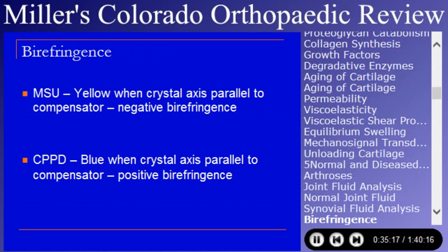Polarized light is used to look for crystals. Birefringence is the property. Monosodium urate crystals are yellow when the crystal axis is parallel to the compensator — they're needle-shaped. This yellow-parallel orientation is called negative birefringence. Calcium pyrophosphate disease crystals, on the other hand, are blue when the crystal axis is parallel to the compensator, tend to be short and squat rather than needle-like, and the blueness is positive birefringence.